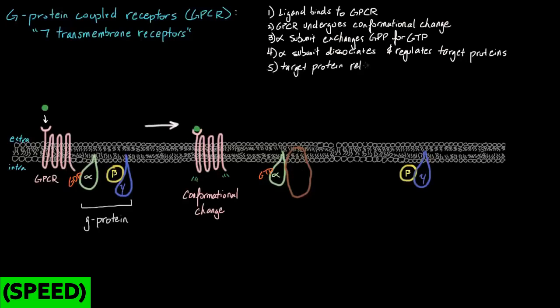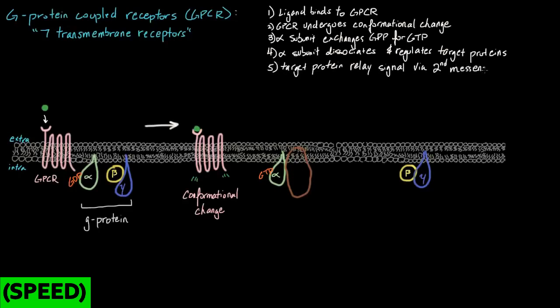Now, step five, once this alpha subunit activates a target protein, this target protein can then relay a signal. As long as this ligand is bound to the GPCR, this process, where our alpha subunit dissociates, looks for protein and regulates that target protein, causing a whole chain of events, can happen repeatedly, as long as this ligand is bound.